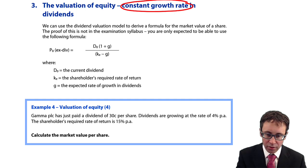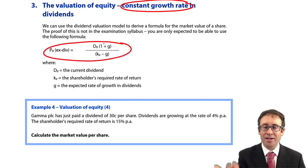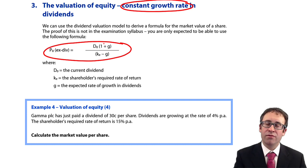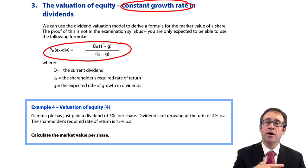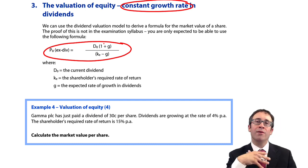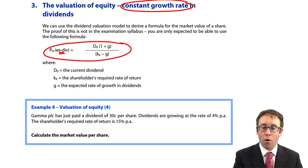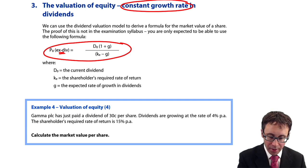So, you have the formula to work out the ex-div price. In the last video, I also gave you the cum-div formula — and it's everything you've seen from F1. Here, however, we are working out the price rather than the cost of equity. The ex-div market value is D0 times (1 + G), divided by (KE minus G).